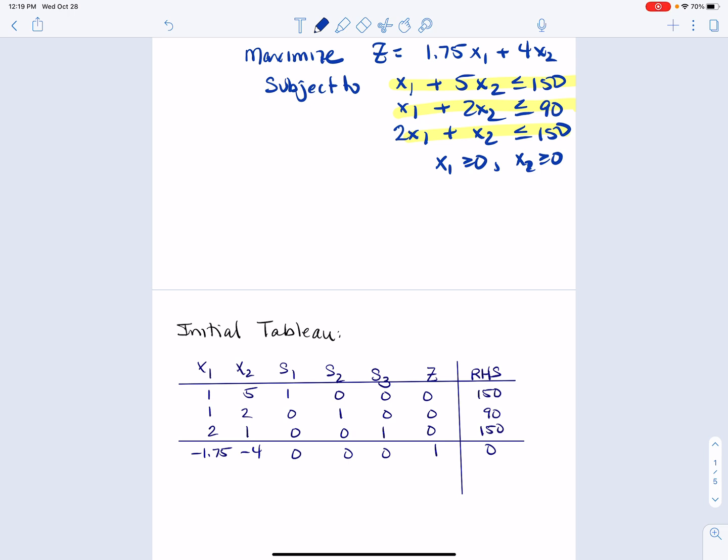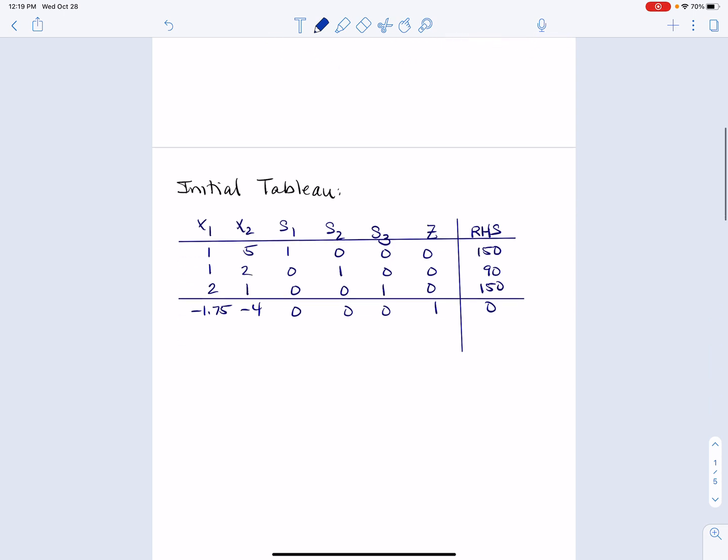So first constraint, first line, x1, 5x2. That gets the S1, the slack variable. And the slack variables just kind of go diagonally until you hit z. And there we go. So that's our initial simplex table.